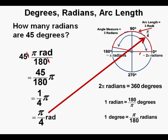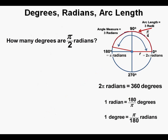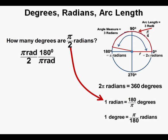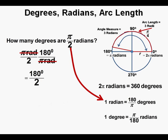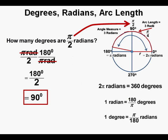We label pi over 4 radians as the halfway point between 0 and 90 degrees on the circle. Now, how many degrees are there in pi over 2 radians? To convert to degrees we use: one radian equals 180 over pi degrees. So pi over 2 radians times 180 degrees over pi radians — the pi radians cancel — leaving 180 over 2 degrees, which simplifies to 90 degrees.